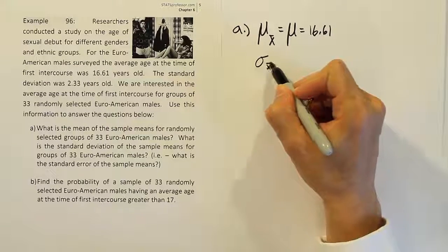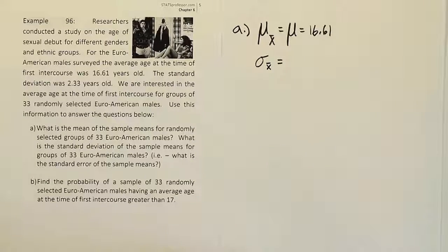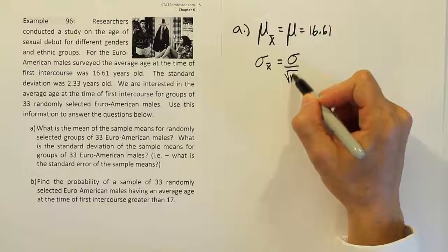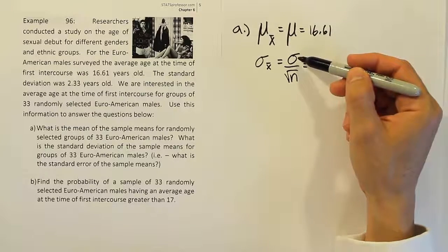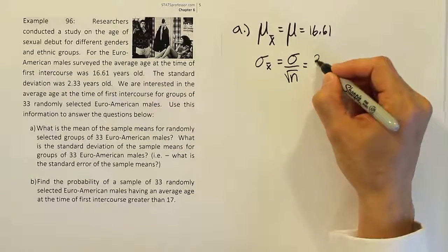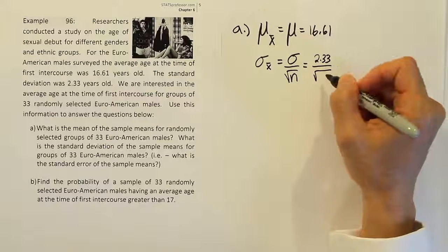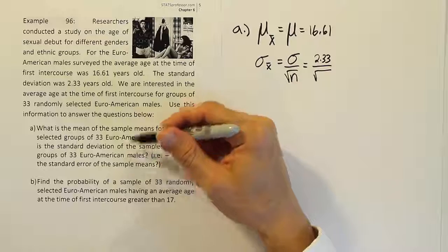Then for the second part of that first question, we have to answer, what's the standard error of x̄, or the standard deviation of the sample means? If you remember from the central limit theorem, it's σ divided by the square root of n. σ is the population standard deviation that was provided for us in the problem, so we're going to use 2.33. And then divided by the square root of n, the n here, the sample size,